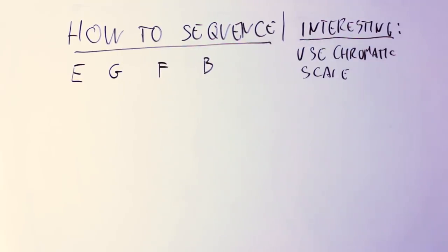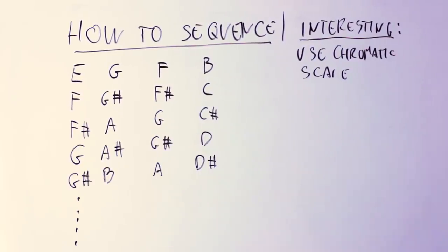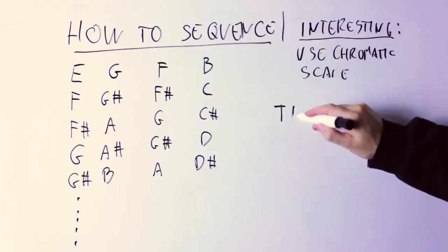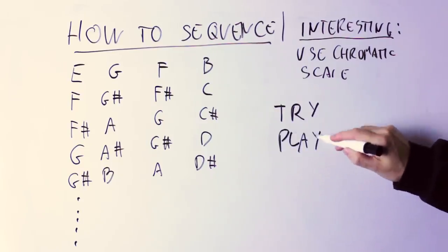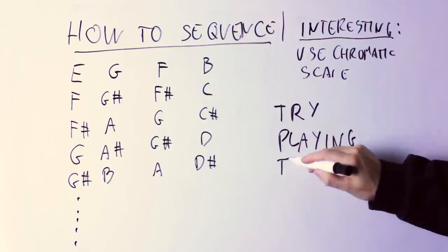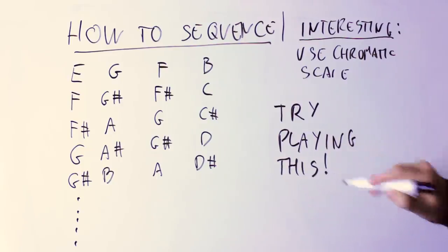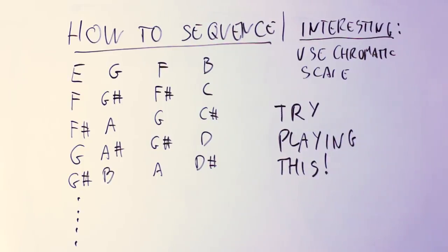I can just move everything one fret higher on the guitar and I'm sequencing it on the chromatic scale, and then again, and then again, and then again, and so on and so forth. I don't really need to calculate anything, I'm just moving the same figure higher up on the fretboard.